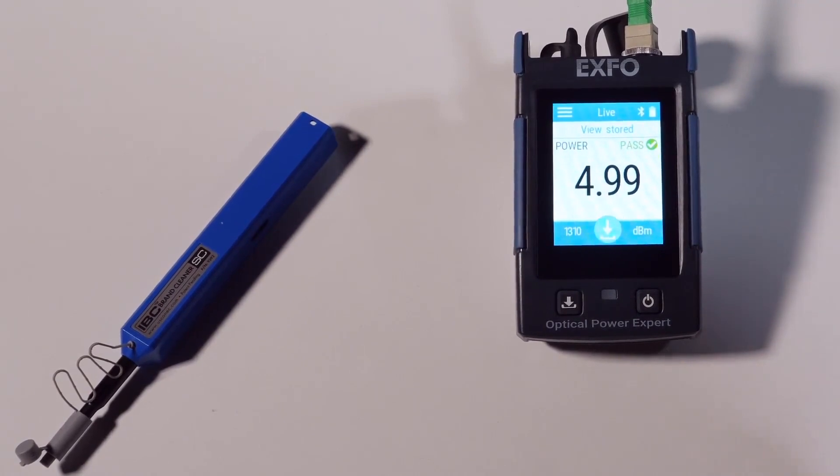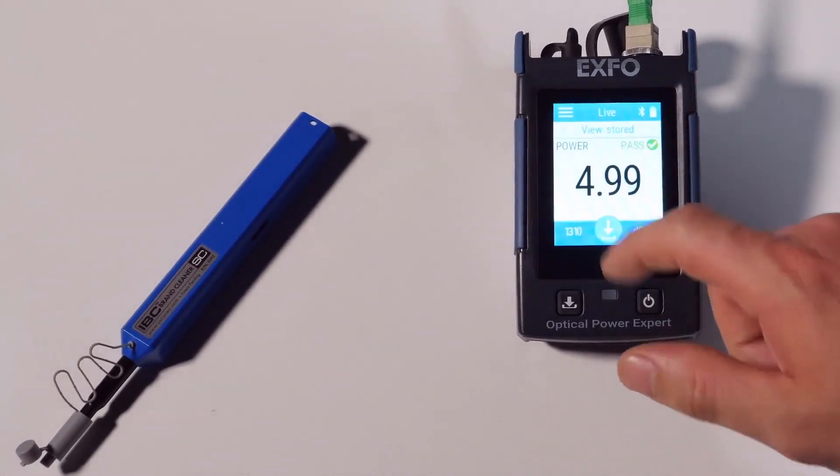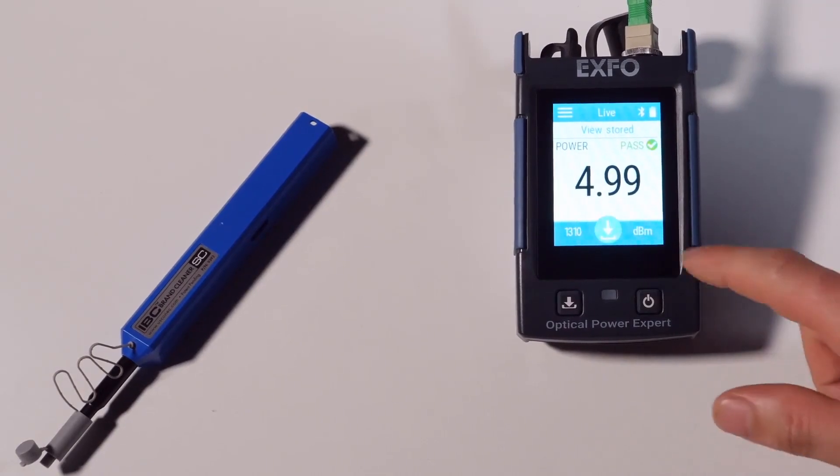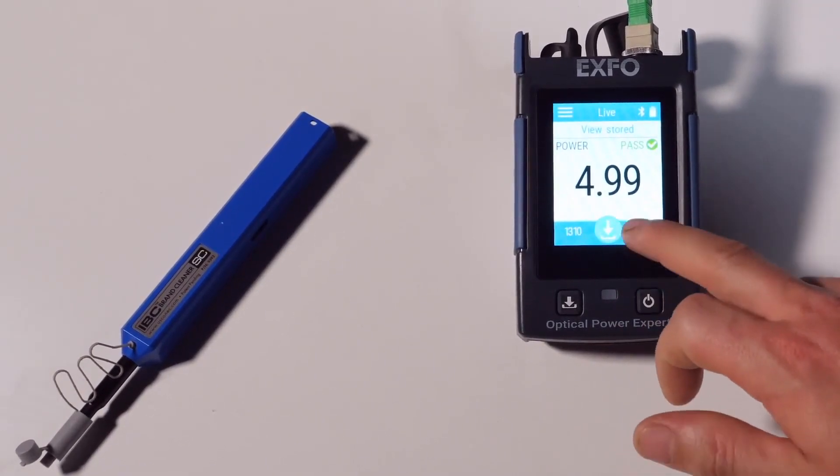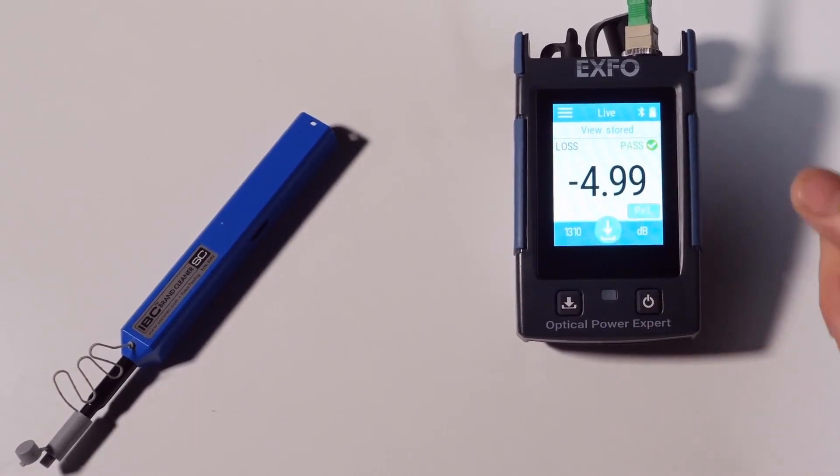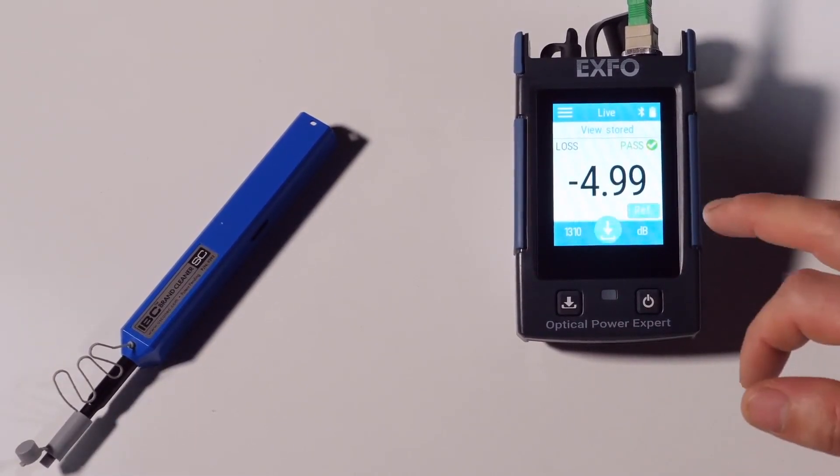Now, in order to do a reference, as you can see, the power is now shown in dBm, which is the absolute power value. When we're going to test the loss, we're going to be in dB, which is relative power.